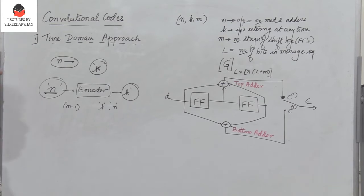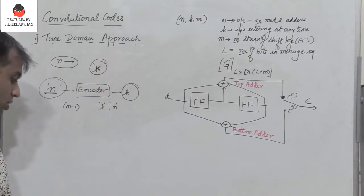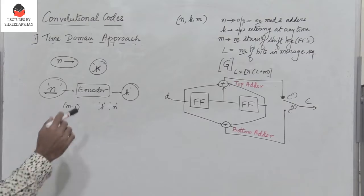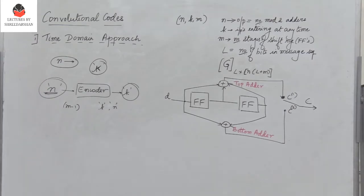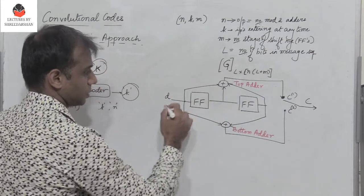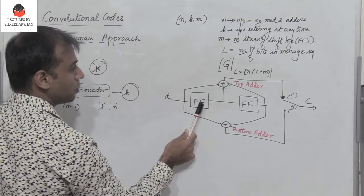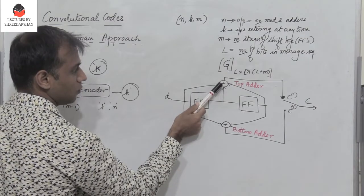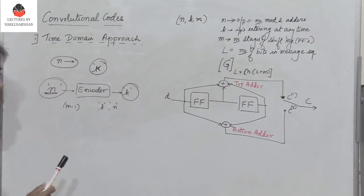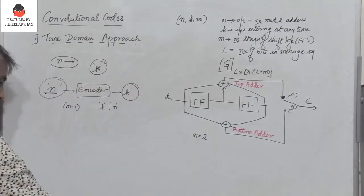Let's take a problem and see how we can find the output of a convolutional encoder using the time domain approach. Given a convolutional encoder defined by n, k, and N: n defines the number of outputs and also the number of modulo-2 adders. In this problem, we find that there are 2 modulo-2 adders — one top adder and one bottom adder — so n equals 2.